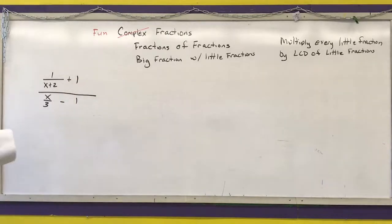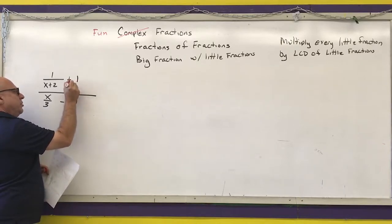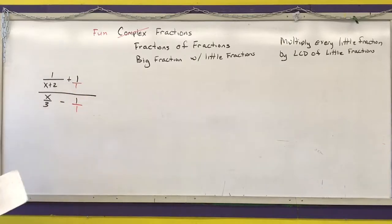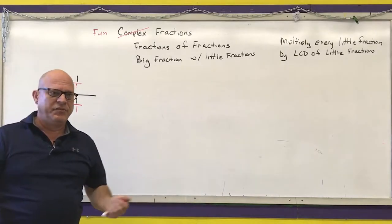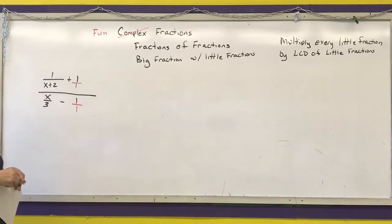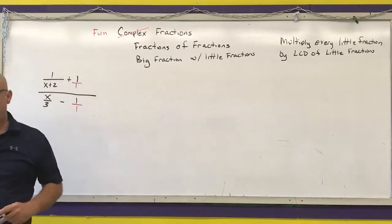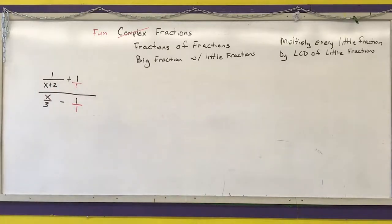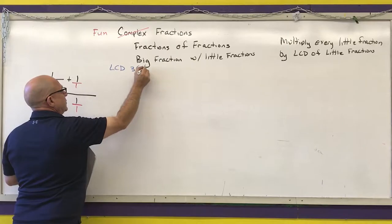The first thing I need to do is find the LCD of all my little fractions. I have four little fractions here. The LCD is the highest power that each factor appears in the denominators of your little fractions. Factor the denominators if necessary — it's already done here. My LCD is going to be 3 times x plus 2.